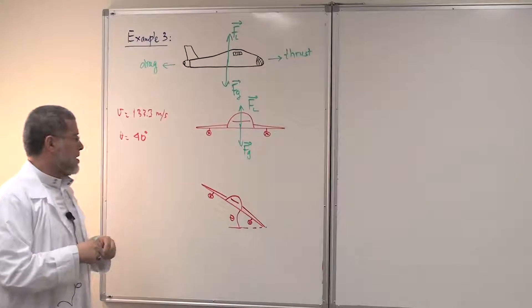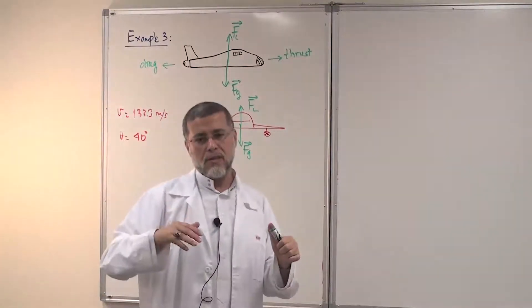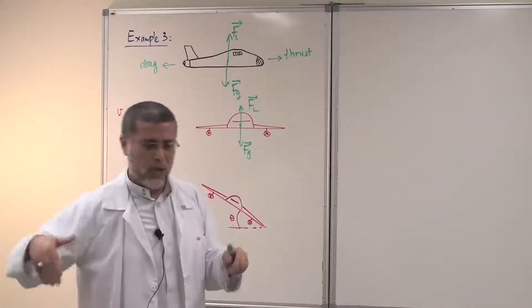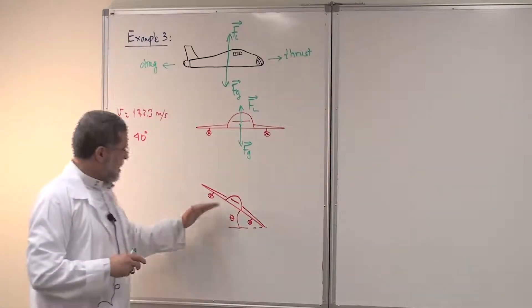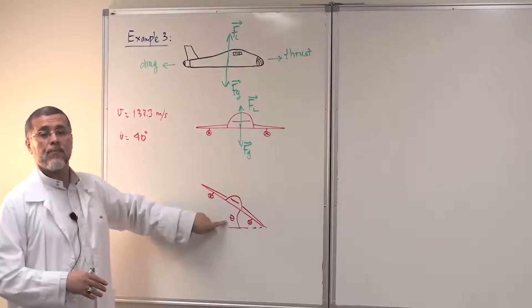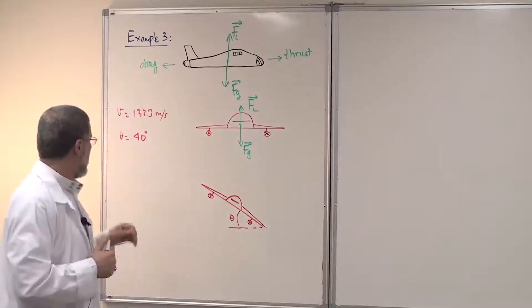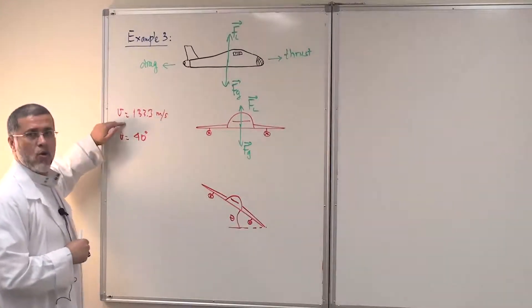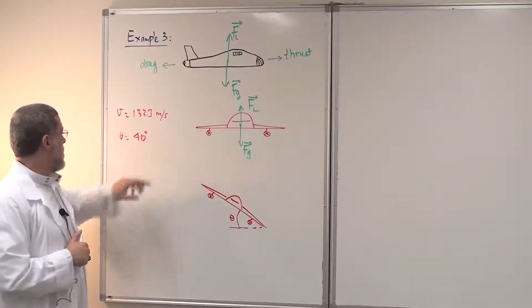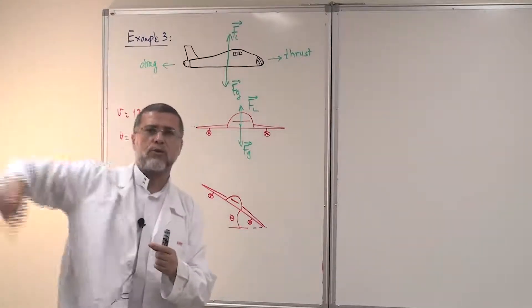The reason for that is that he wants to rotate, to make a turn, a circular turn. Because maybe he passed the airport and he wants to come back to land. So he makes this maneuver. He raises the airplane like this with an angle theta. And this angle is very important for him. It is a specific angle. Now, assume that the airplane has a speed of 133.3 meters per second, and the angle theta is 40 degrees. And we want to know what is the radius of this rotation.